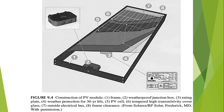The junction box is needed to securely attach the cables required to interconnect the panels. It is the central point where all the cells interconnect and must be protected from moisture and dirt. It is made waterproof specifically so that the connections are protected from moisture, rain, and other dust particles.